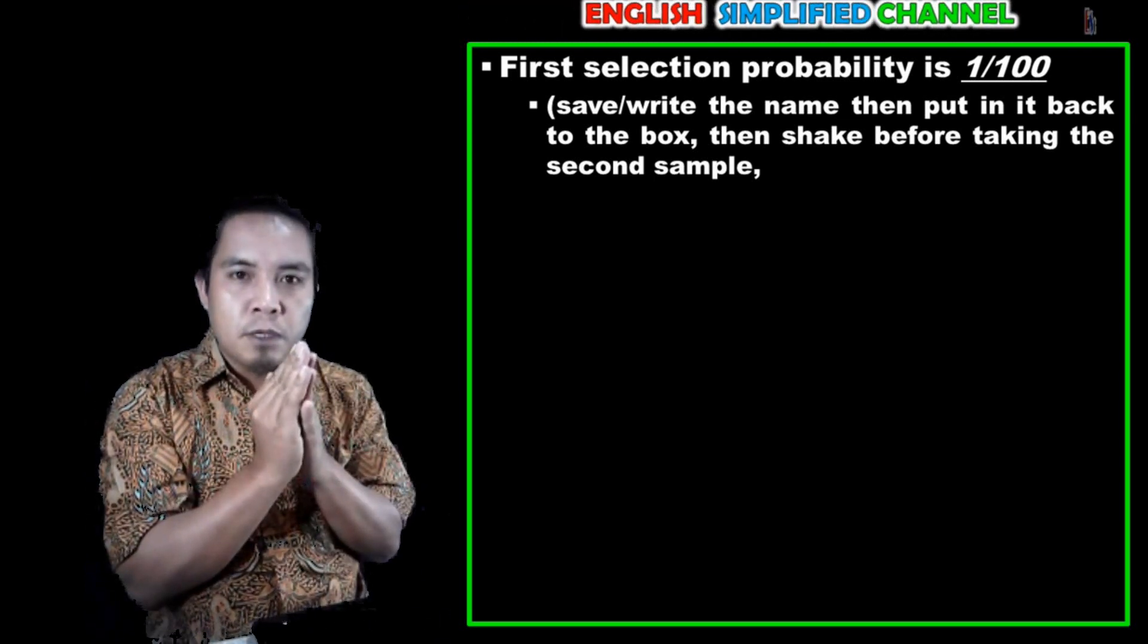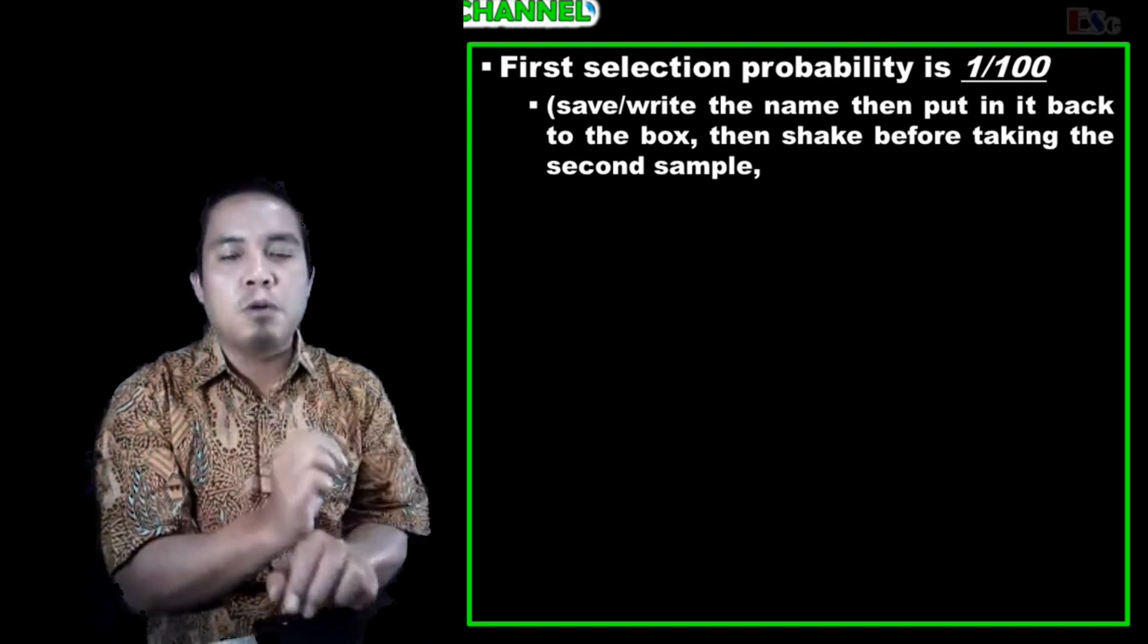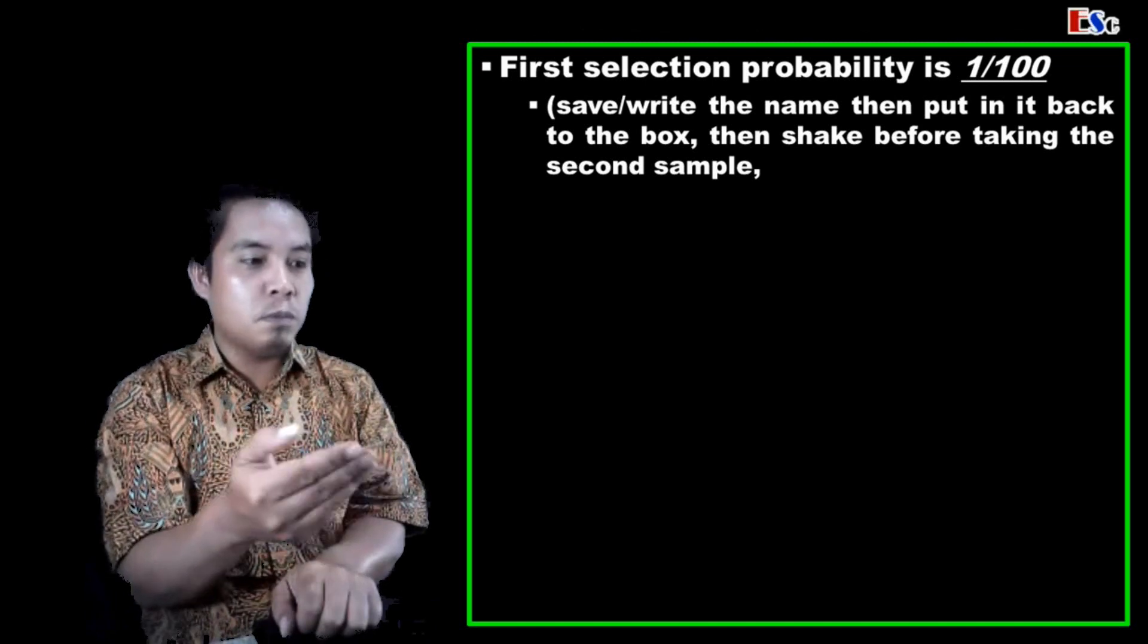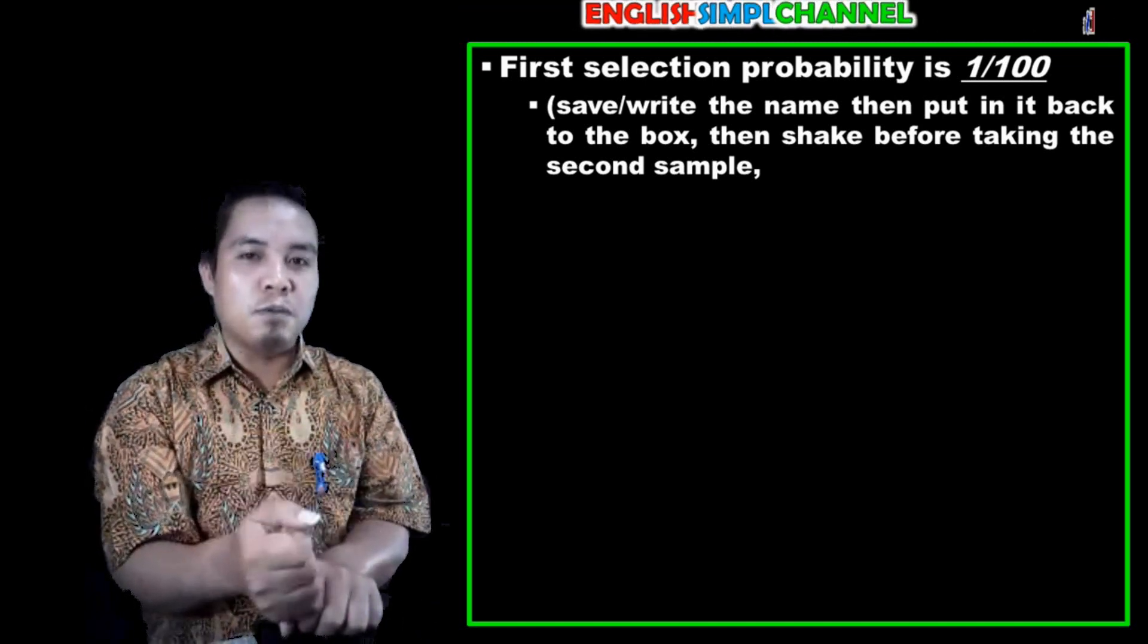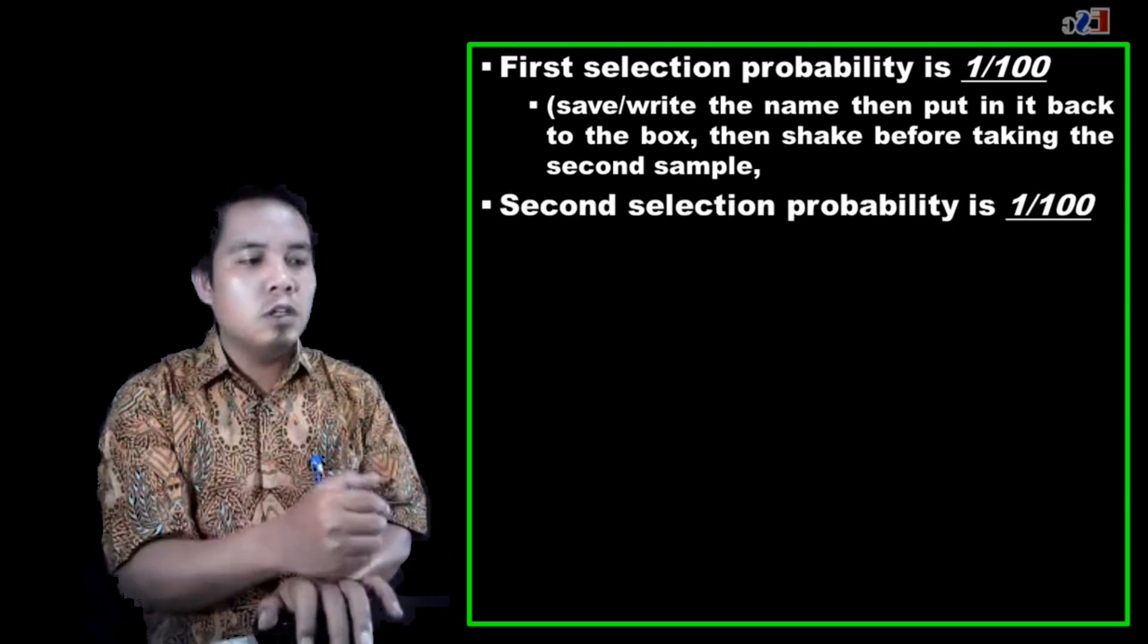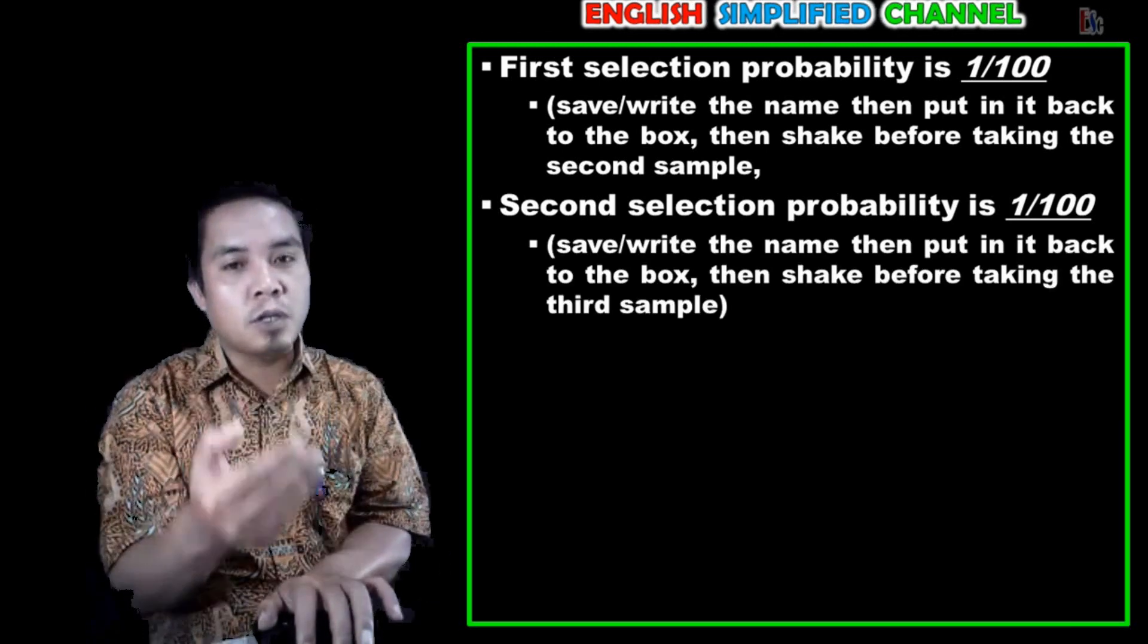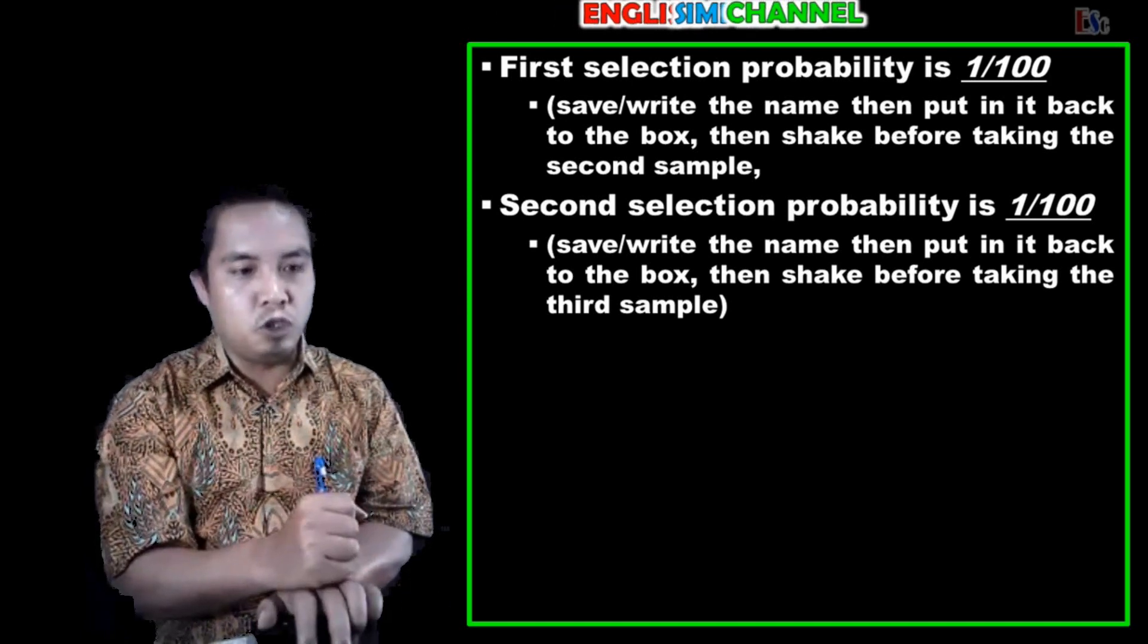And fold the paper again, put it back to the box or the container. Save, write the name, then put it back to the box, then save it before taking the second sample. So you do this until you get 10 or the number of the sample that you want from the population.